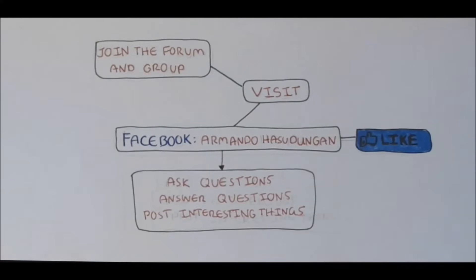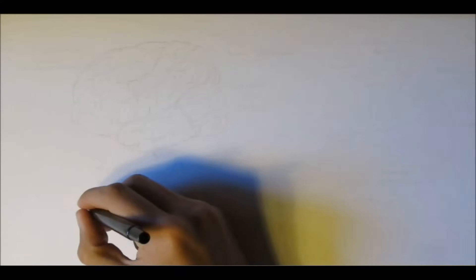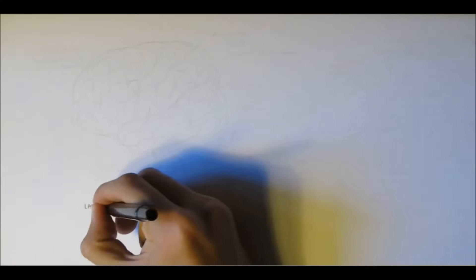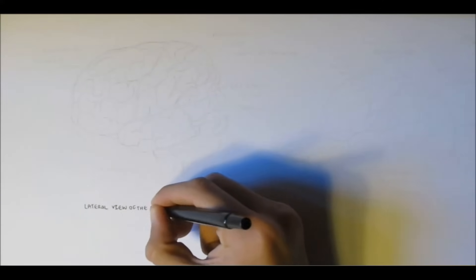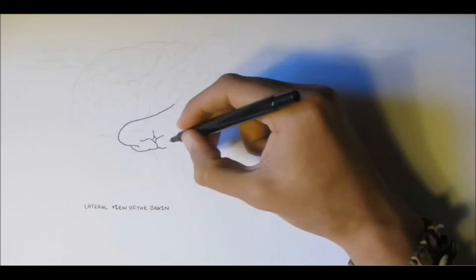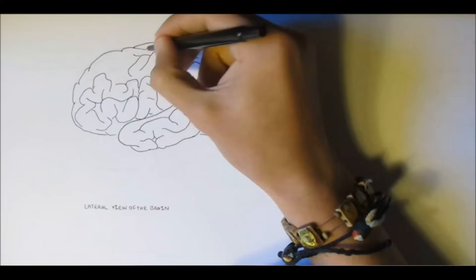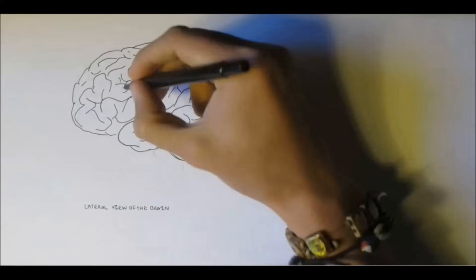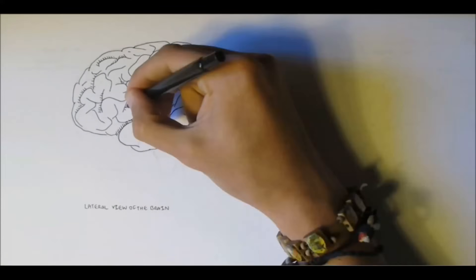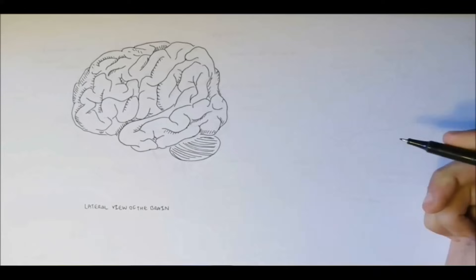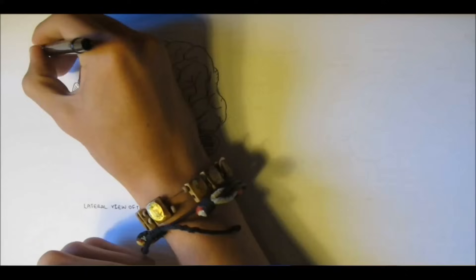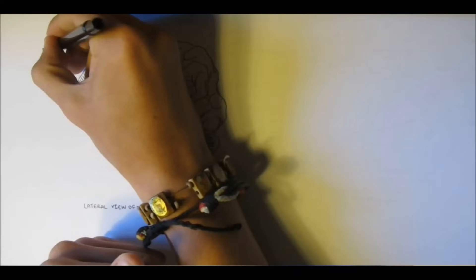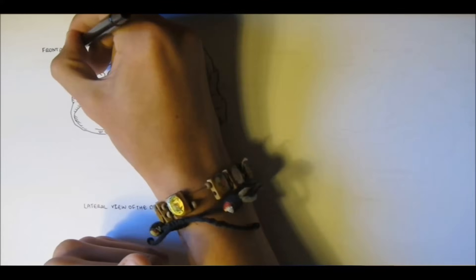Today's video is going to talk about the anatomy of the brain — just a brief introduction and overview, starting from the lateral view of the brain. Here we will look at the four major lobes in the brain. The first one is the frontal lobe, which is at the front of the brain, in our forehead.